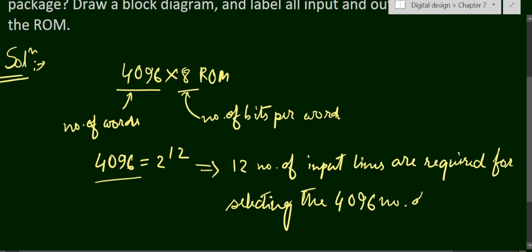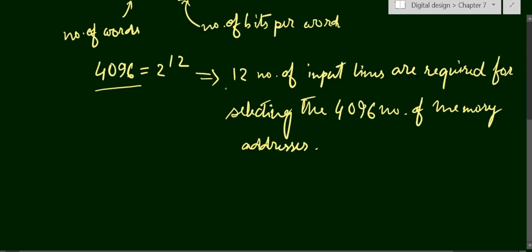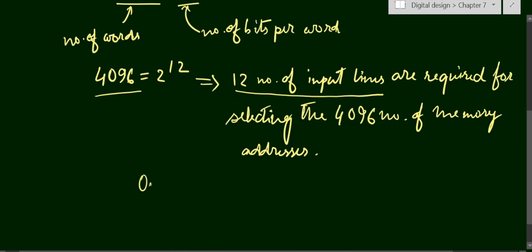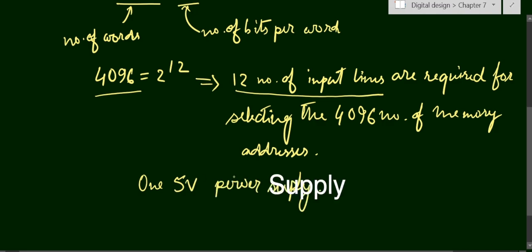For this 4096 into 8 ROM, we need 12 input lines for the decoder — that will be the internal circuit of the ROM unit. We are given one 5-volt power supply, so we need one 5-volt power input.